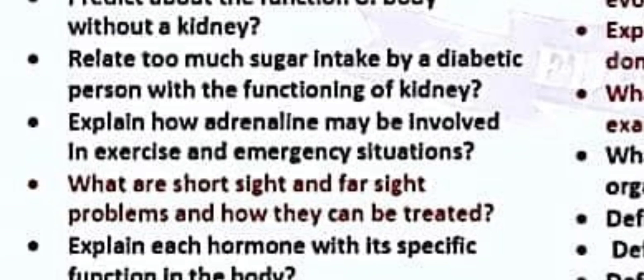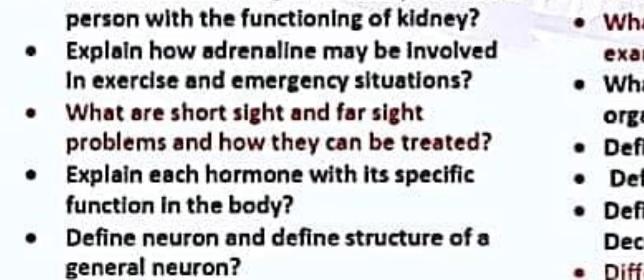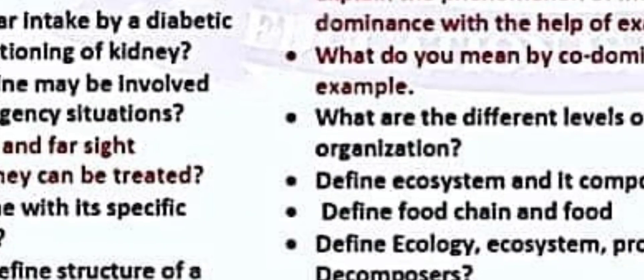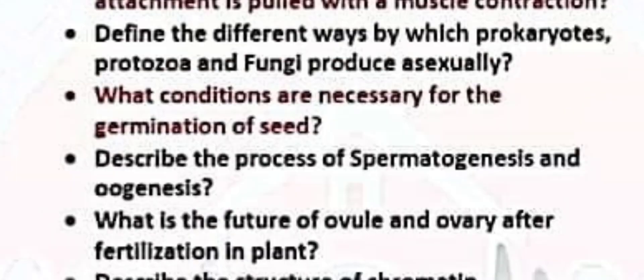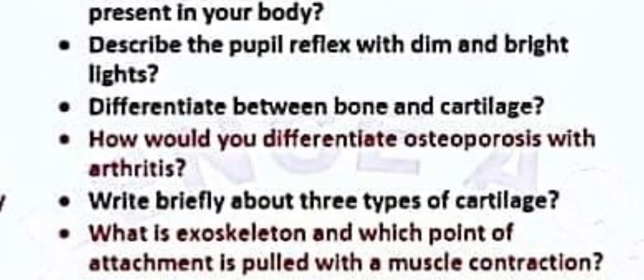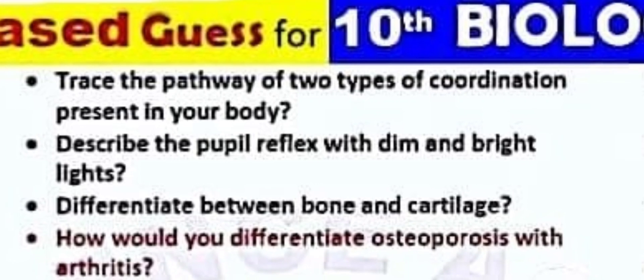Explain how adrenaline may be involved in exercise and emergency situations. What are the short-sight and far-sight problems and how can they be treated? Explain each hormone with its specific function in the body. Define neurons and describe the structure of a general neuron.